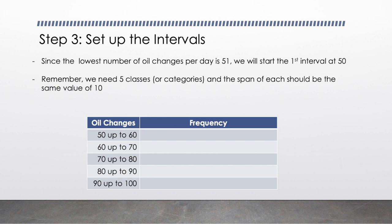We're going to start our first interval at 50. Since we're doing intervals of 10, we're going to go up to 60. Keep in mind we should have five classes in which to sort our data. So I'm going to do 50 up to 60, 60 up to 70, 70 up to 80, 80 up to 90, and finally for my fifth class 90 up to 100. The word 'up to' is very important because any day where we had between 50 and 59 oil changes will fall in the first class. We want each data value to only fit into one class, so that's why it's important to say 'up to 60' and then start the next one with 60.